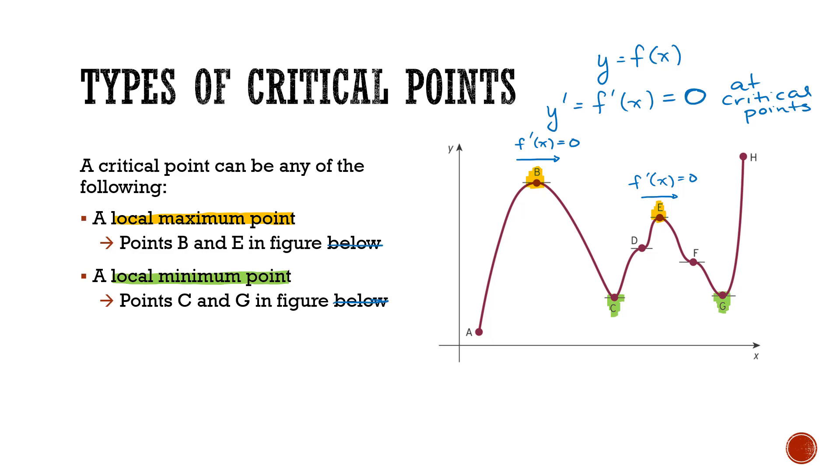These shouldn't say below. They were just in the figure to the right. So we can see at point C and at point G, once again, our slope is equal to zero. So these would be considered critical points.